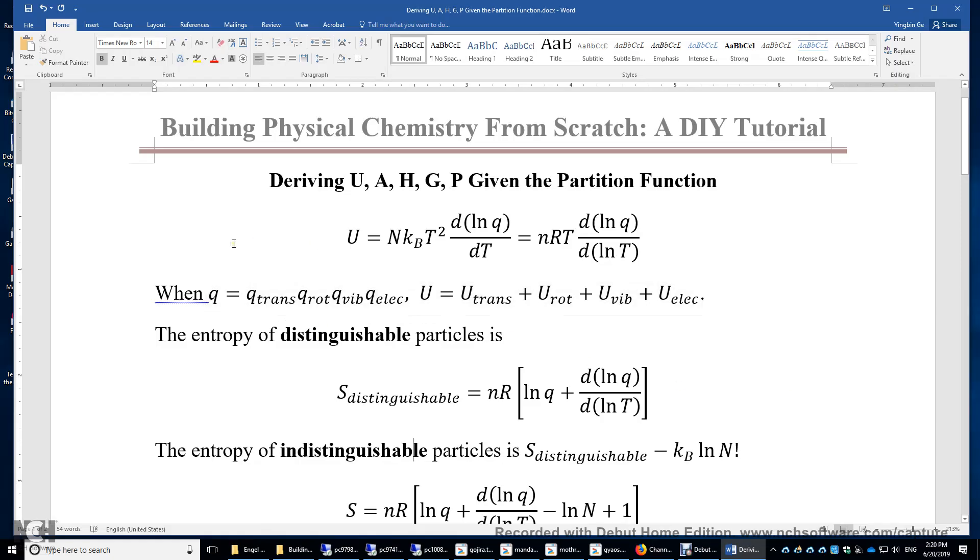In this video, I will derive the internal energy U, Helmholtz free energy A, enthalpy H, Gibbs free energy G, and pressure P given the partition function. We learned the internal energy U is n times kBT squared times dLnq over dT. And for simplicity and consistency, we can rewrite this expression to be nRT times dLnq over dLnT. And q is the partition function of the system.